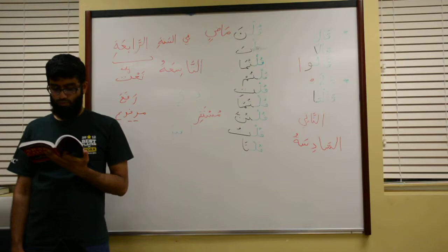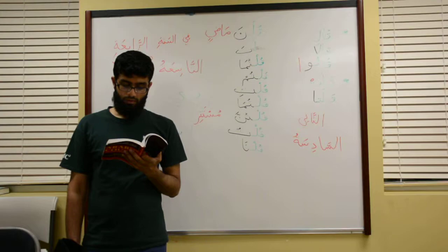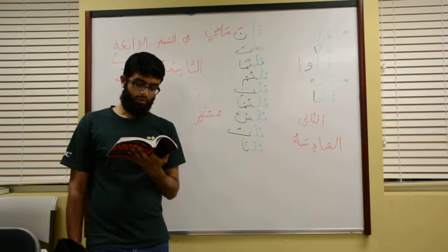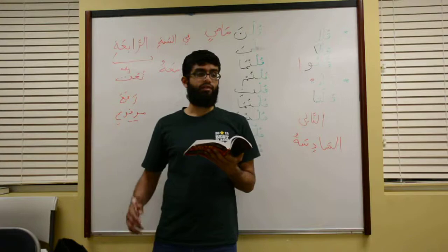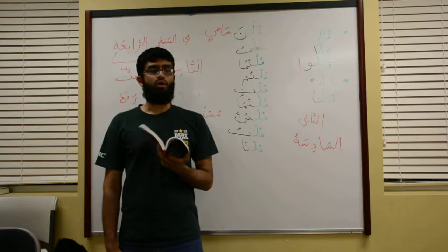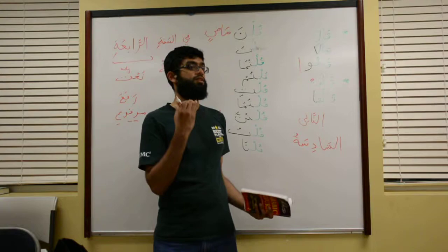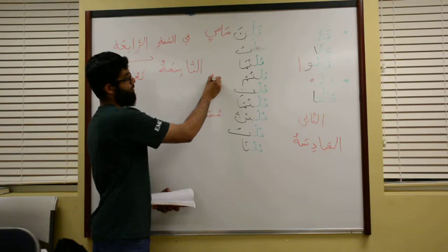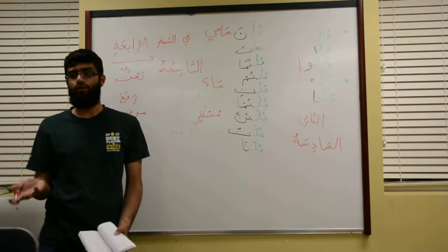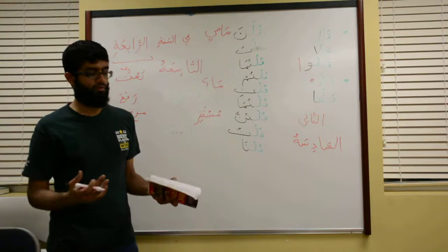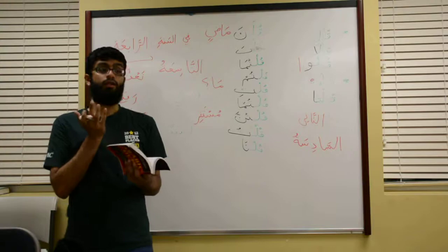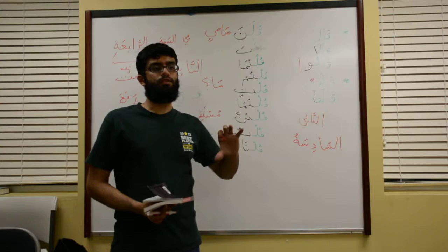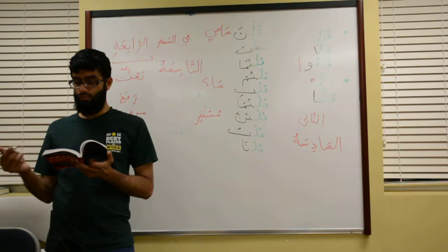Number two: to render a verb in the Madi negative, the particle ma is used. For example, zahabtu ilal suqi means I went to the market. Ma zahabtu ilal suqi means I did not go to the market. So all you do to make something negative is put ma before the past tense verb.